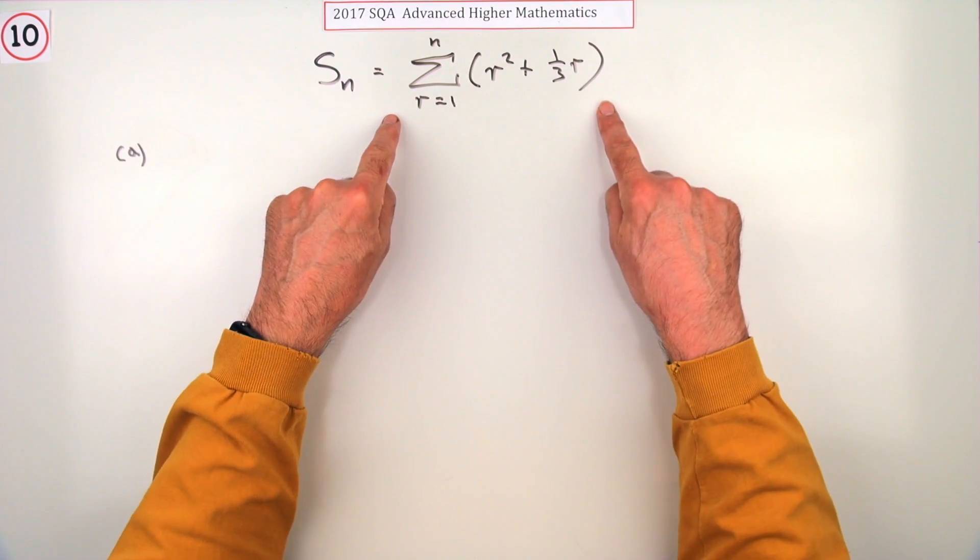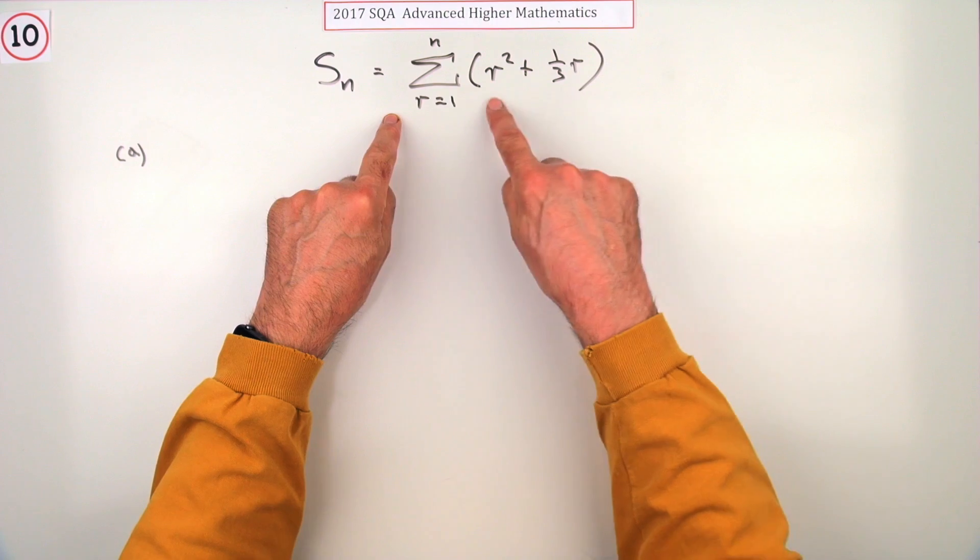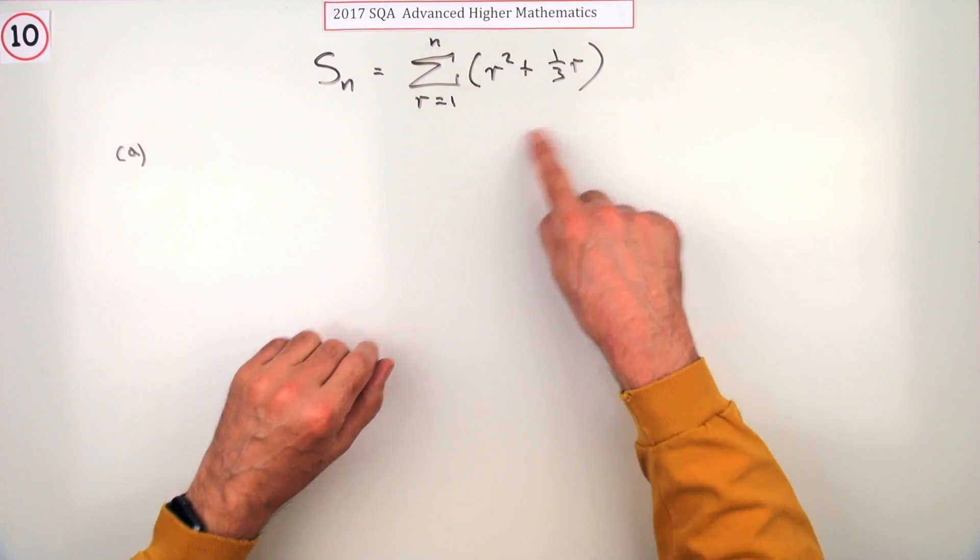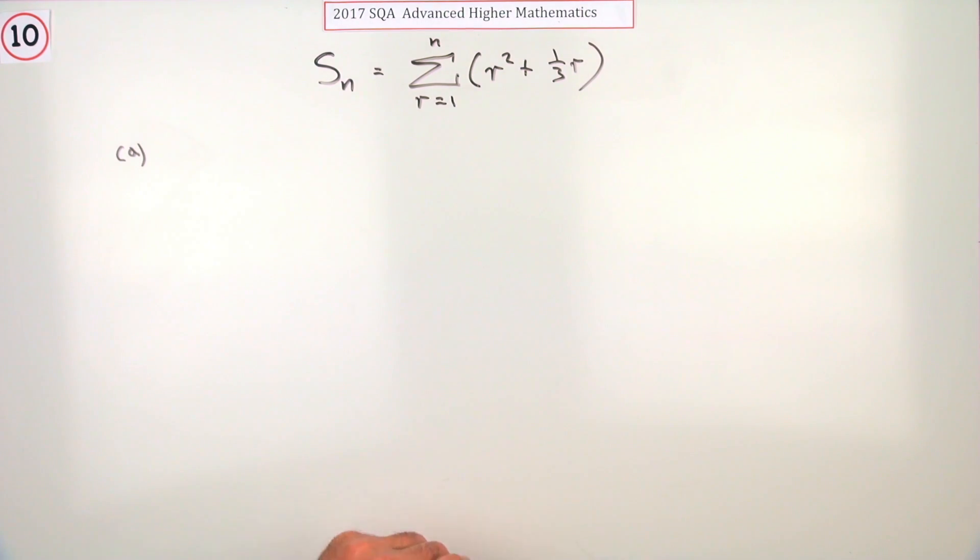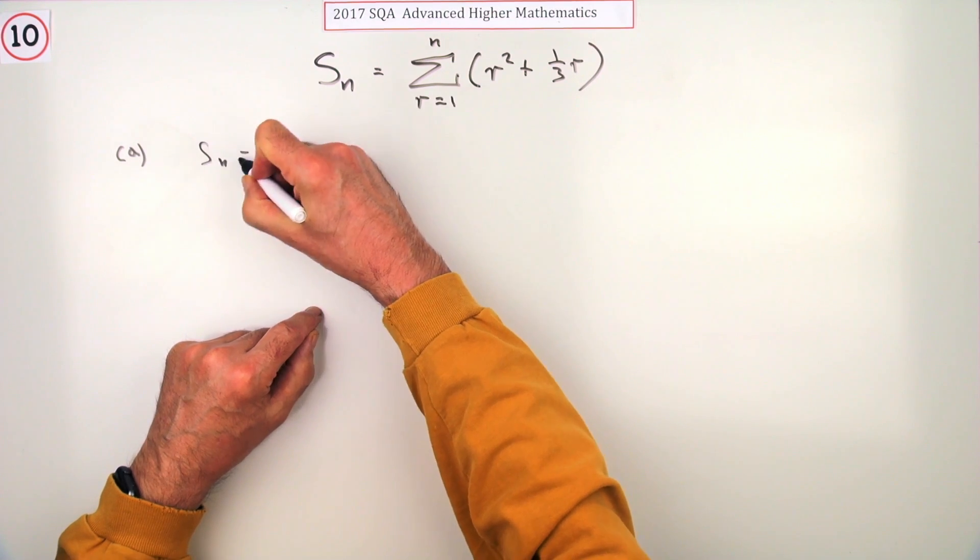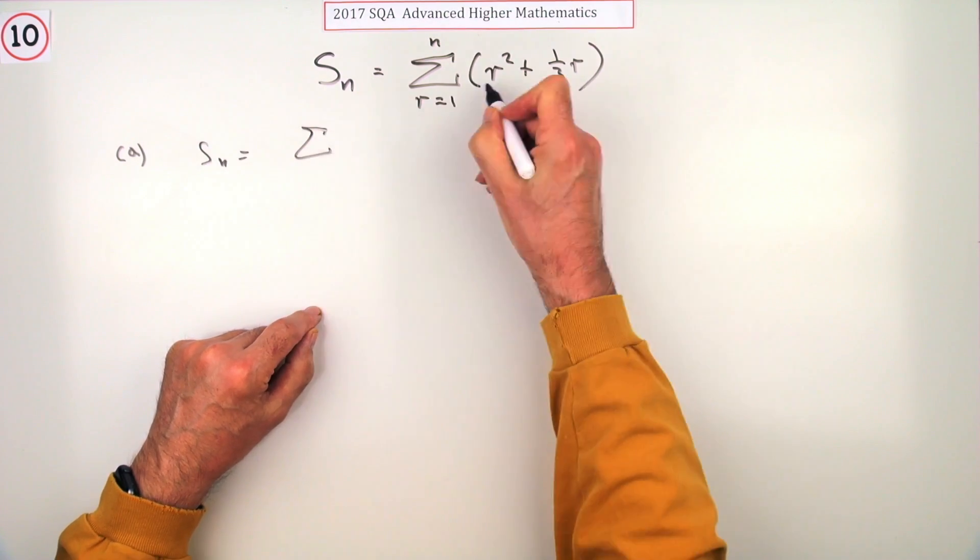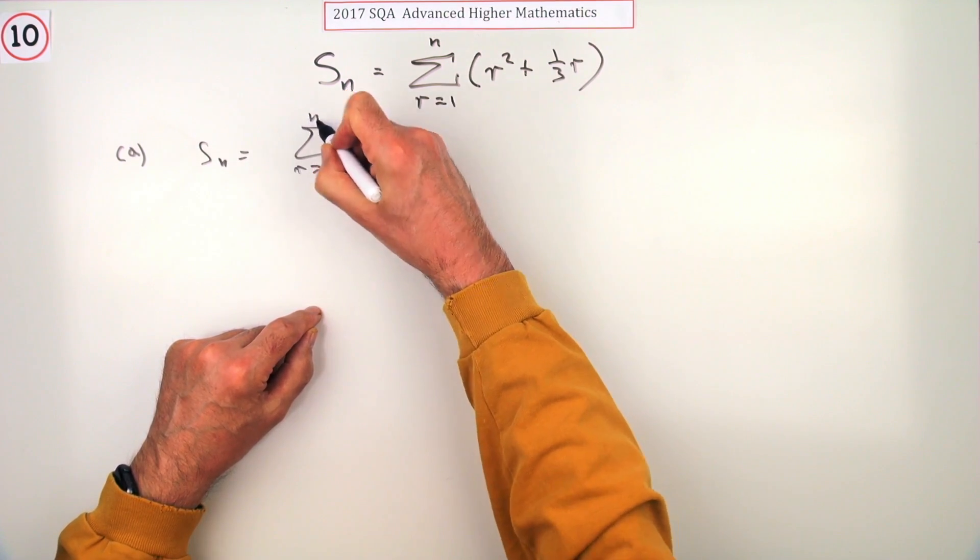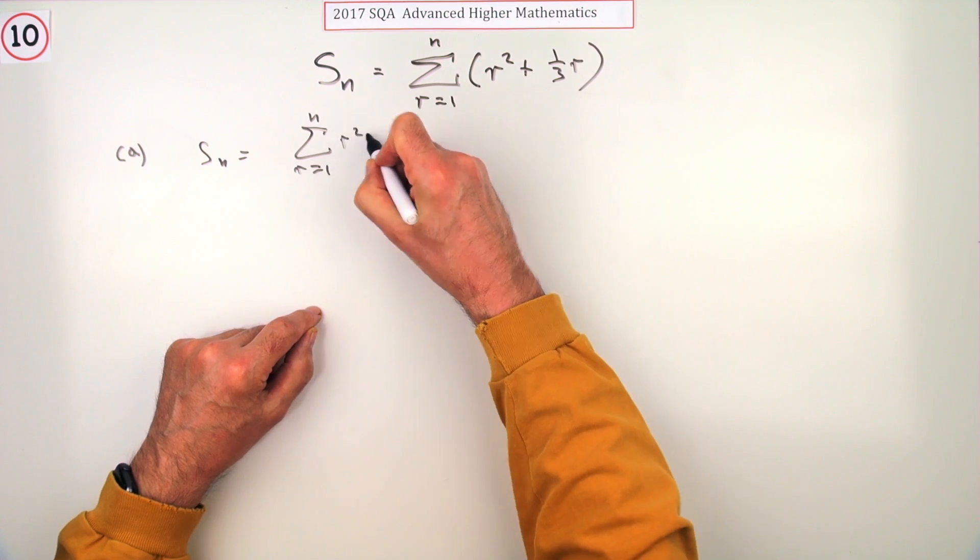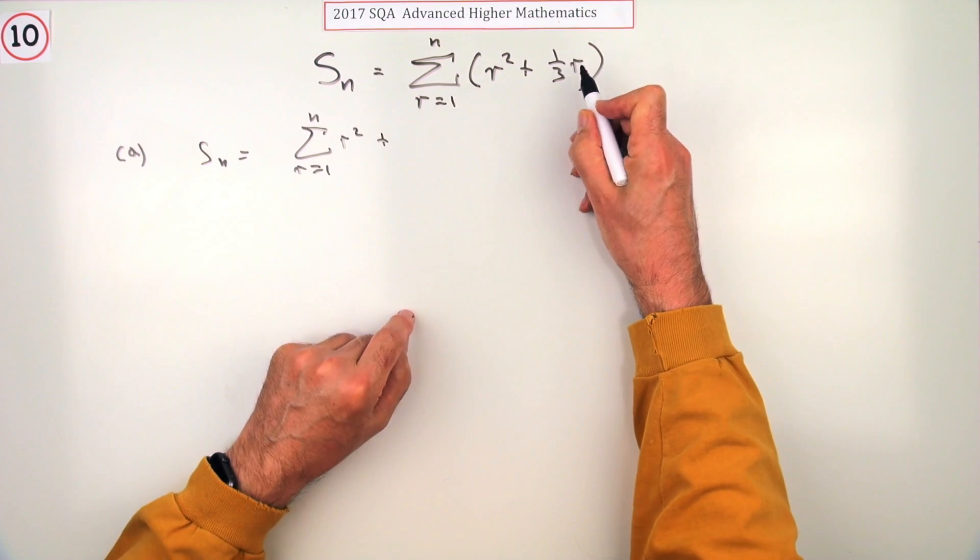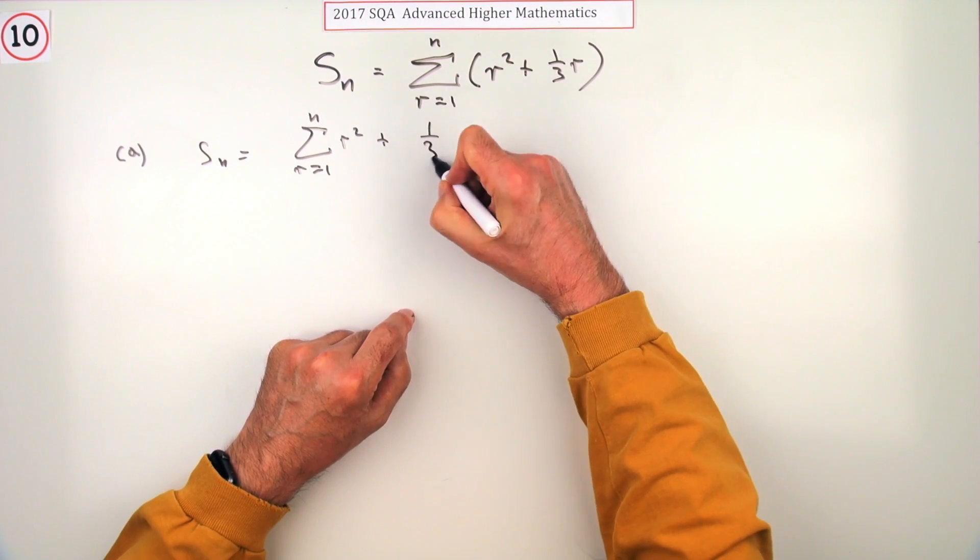The thing to do here is remember it's a summation, and you used to have to learn these summations, but now you can just look up at the front. If you split S_n up, it would split up into these two parts: you've got the sum from one to n of r squared, and you've got the sum from one to n of r, but only a third of that.